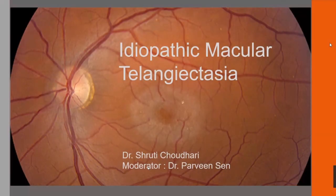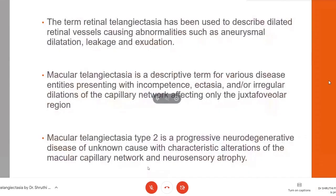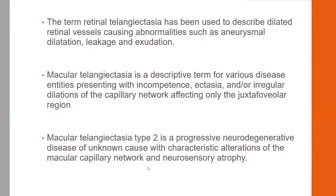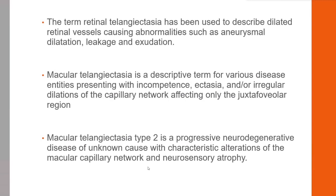Good evening everyone. Today's topic for discussion is idiopathic macular telangiectasia. The term retinal telangiectasia has been used to describe dilated retinal vessels causing abnormalities such as aneurysmal dilatation, leakage, and exudation. Macular telangiectasia is a descriptive term for various disease entities presenting with incompetence, ectasia, and irregular dilation of the capillary network affecting only the juxtafoveolar region.